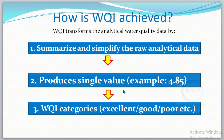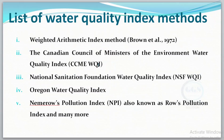There are several Water Quality Index methods available. Number one is the Weighted Arithmetic Index method. Number two is the Canadian Council of Ministers of the Environment Water Quality Index (CCME). We also have the National Sanitation Foundation Water Quality Index (NSF), the Oregon Water Quality Index, and Nemerow's Pollution Index — also known as the Row Pollution Index — among many more.